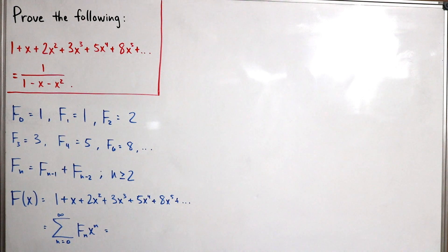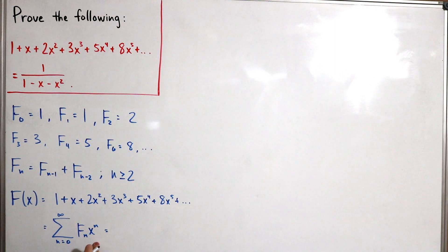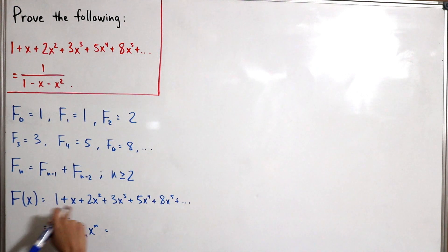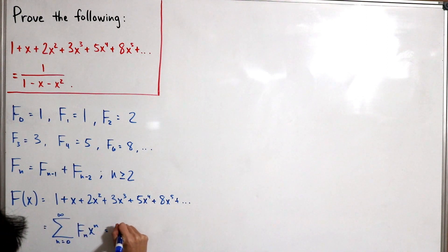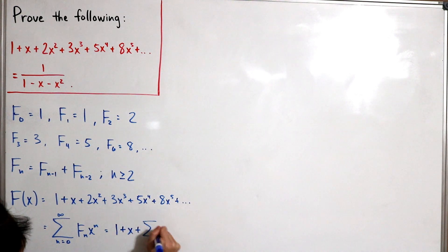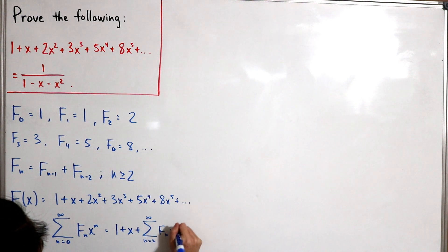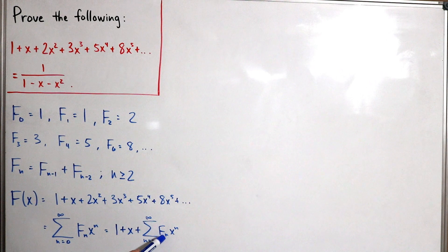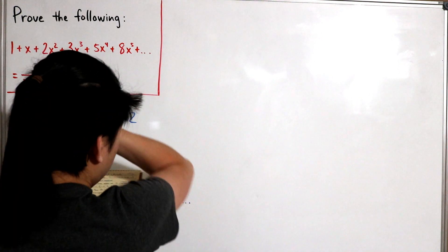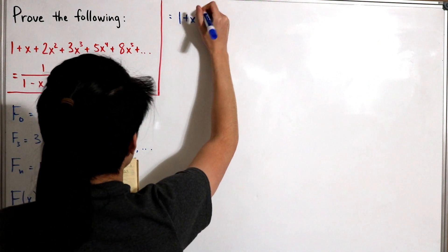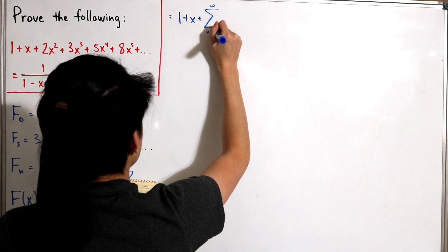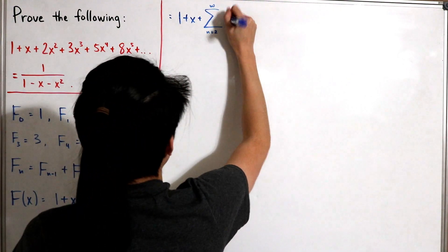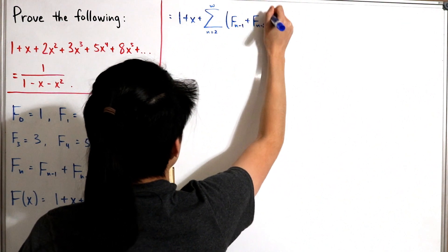Now I'll do a re-indexing. We start the sum index at n = 2, but to preserve the equality we pull out the n = 0 and n = 1 terms explicitly, leaving us with 1 + x plus the infinite sum from n = 2 of F(n)·x^n. Since we have the recurrence relation, we substitute F(n) = F(n−1) + F(n−2) into the infinite sum, giving us F(n−1) + F(n−2) multiplied by x^n.